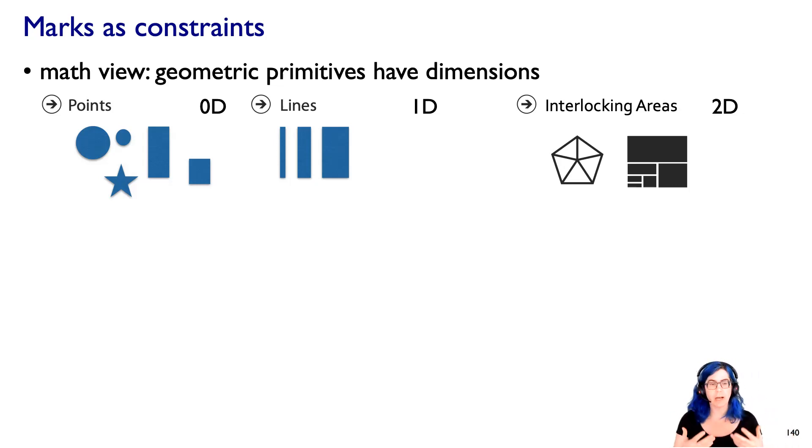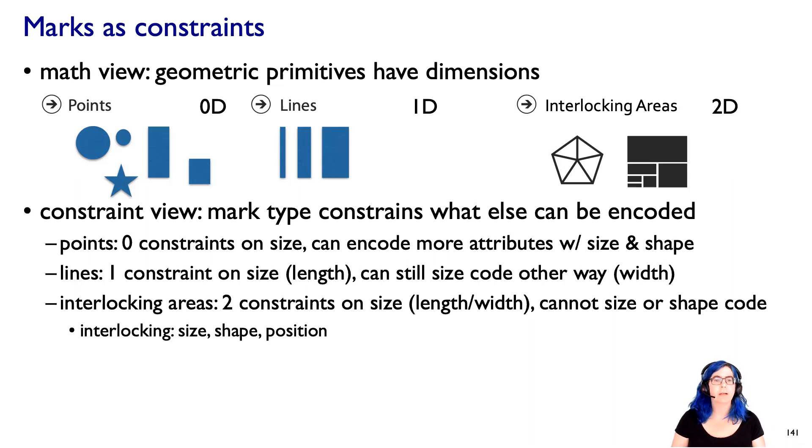It can be more useful to think of these as how many constraints are there on what else you can encode into a mark. If you're using a point to represent an item, it is unconstrained. You could do anything you want with size, you could do shape. You can size and shape code point marks - zero constraints.